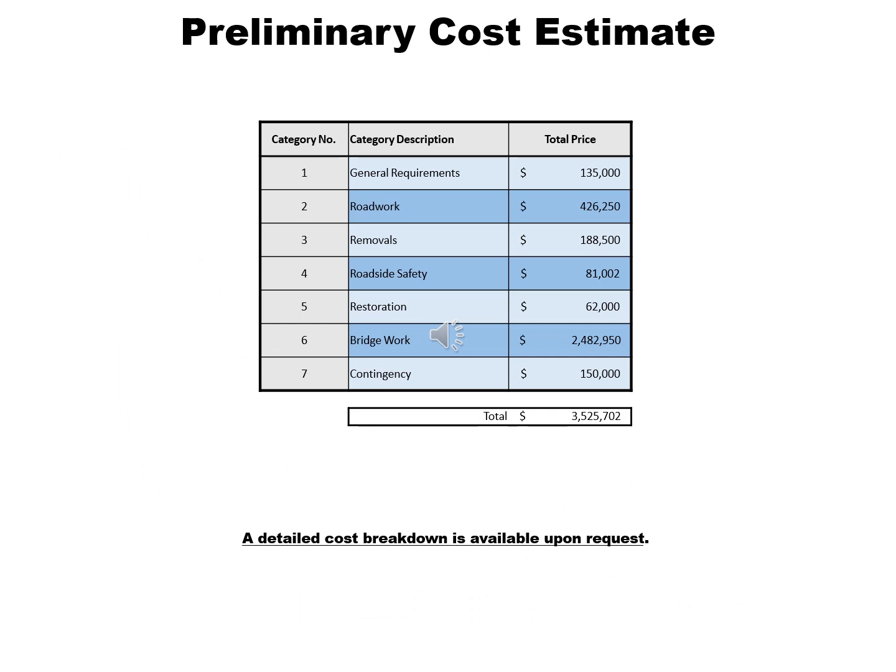Preliminary cost estimate. This cost estimate has seven categories: Category 1, General Requirements, estimated at $135,000; Category 2, Roadwork, estimated at $426,250; Category 3, Removals, estimated at $188,500; Category 4, Roadside Safety, estimated at $81,002; Category 5, Restoration, estimated at $62,000; Category 6, Bridgework, estimated at $2,482,950; Category 7, Contingency, estimated at $150,000. The total of these estimates is $3,525,702. A detailed cost breakdown is available upon request.